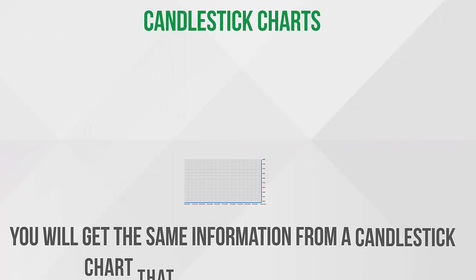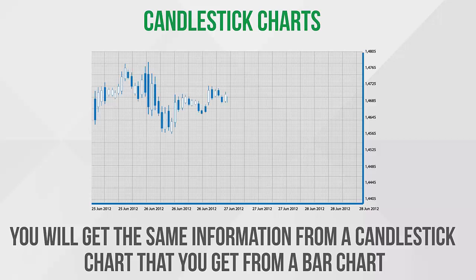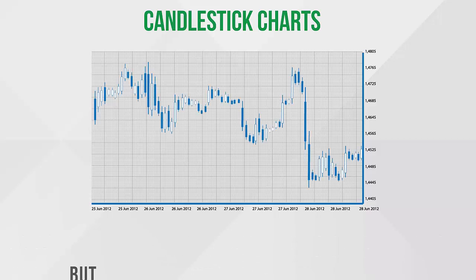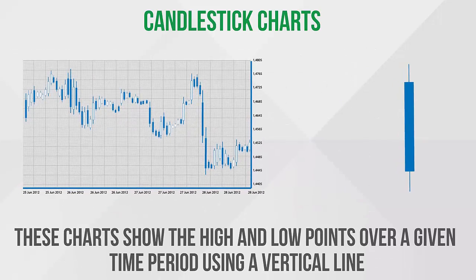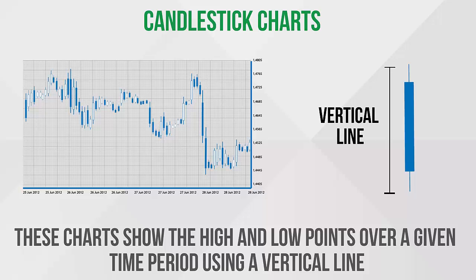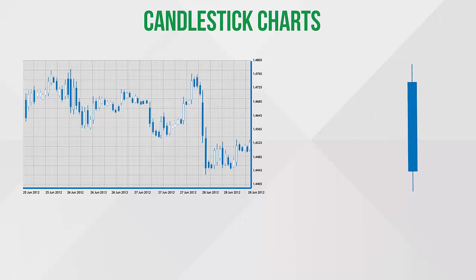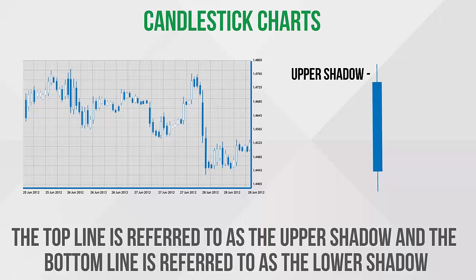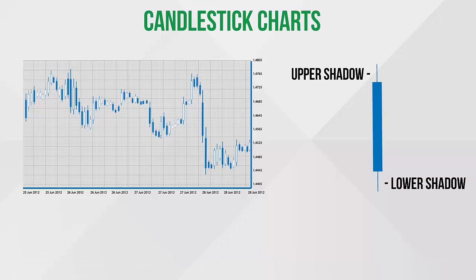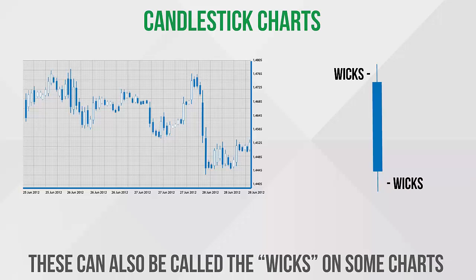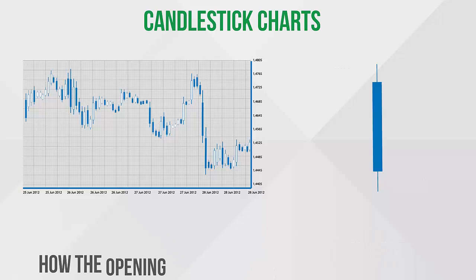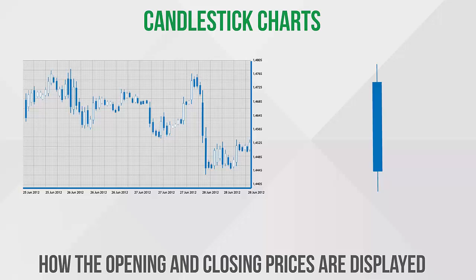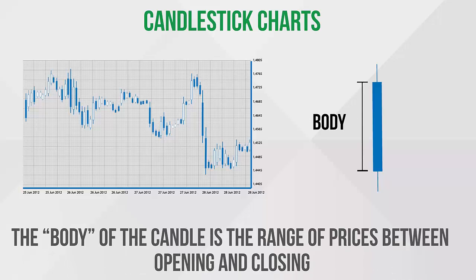Candlestick charts: generally you will get the same information from a candlestick chart that you get from a bar chart, but the format is more visually satisfying. These charts show the high and low points over a given time period using a vertical line. The top line is referred to as the upper shadow and the bottom line is referred to as the lower shadow. These can also be called wicks on some charts.